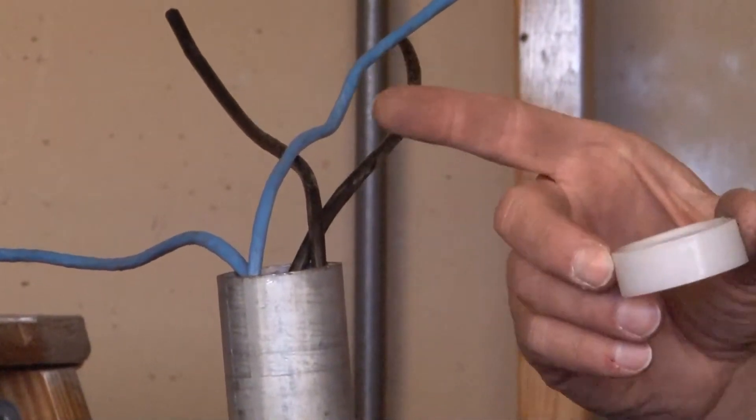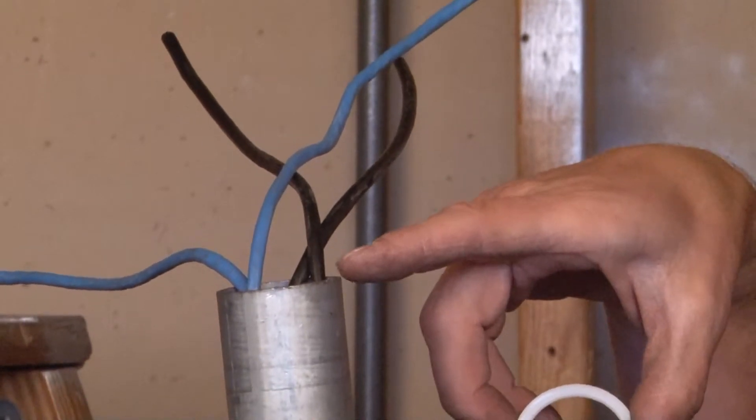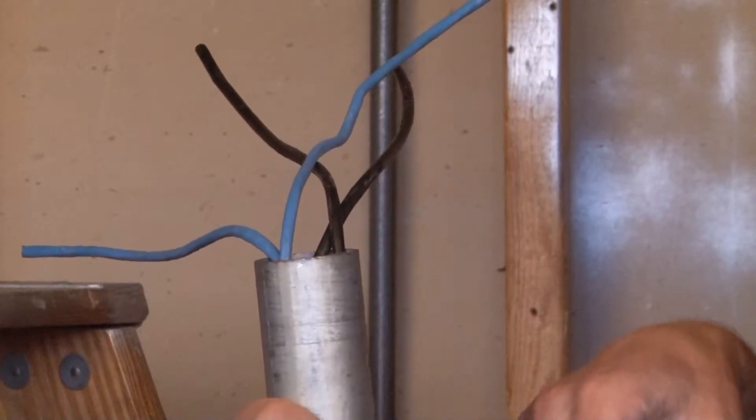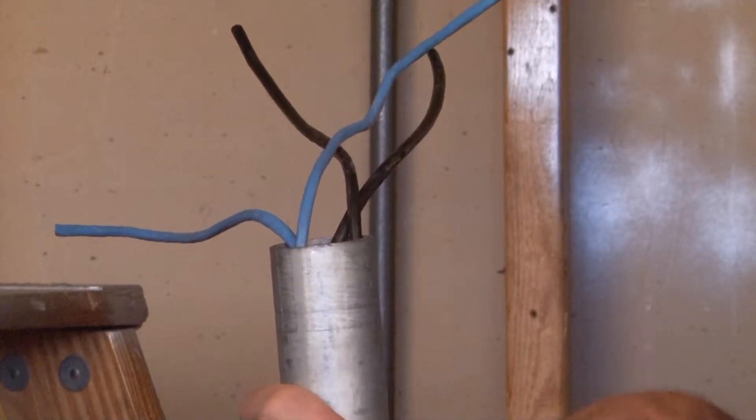As you can see we have low voltage cables, but the original installer forgot to install an insulating bushing to protect the jacket from the sharp edge of the conduit. Inspectors hate seeing this on a job site.